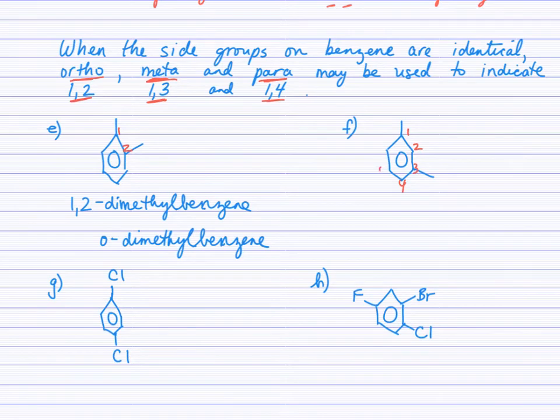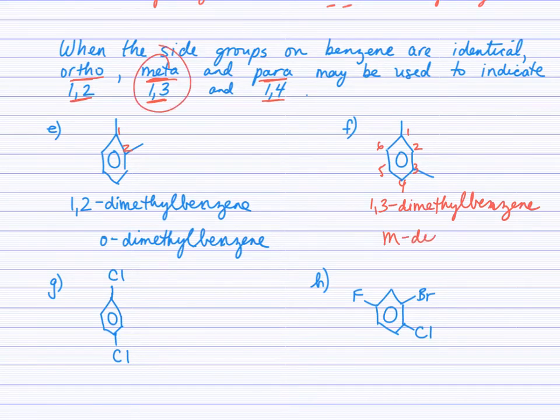So when you look at F, and think of the numbering here, if I start there, then I'm looking at 1,3-dimethylbenzene. So 1,3-dimethylbenzene could also have been called meta, because meta is the 1, 3 arrangement. So meta-dimethylbenzene.